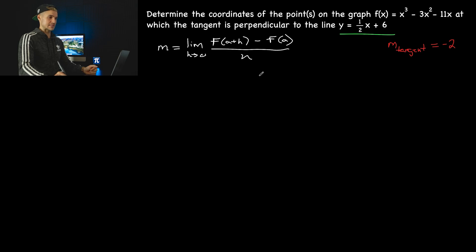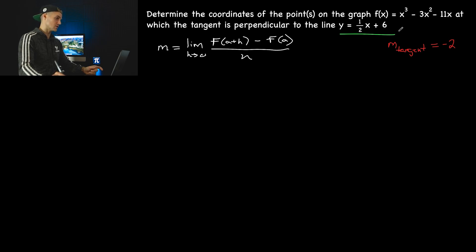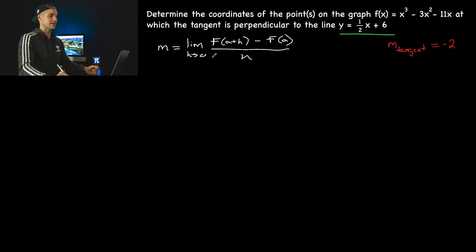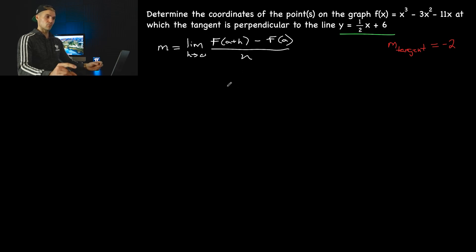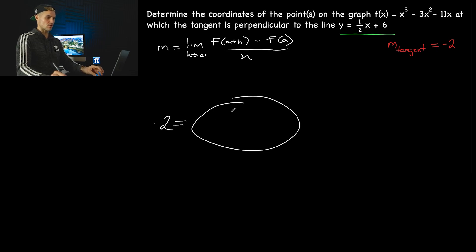To do that, we have to use the difference quotient. I've gone through examples like this in the lecture videos — make sure you've watched those, because I go through different scenarios there with different kinds of functions. This is a polynomial function, but you may get a rational function or a square root function. We have to find the general expression for the slope of the tangent using the difference quotient, and then find the a values where it equals negative two.